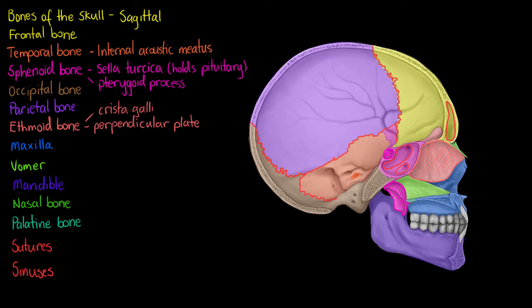And the second feature of our ethmoid bone that we can see here above the perpendicular plate is our crista galli. And I think we're almost going to have to do a full video on our ethmoid bone because it has quite a few important features.